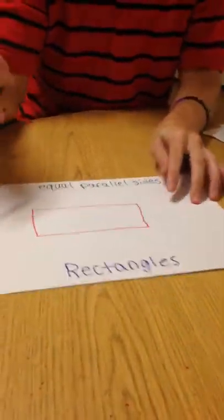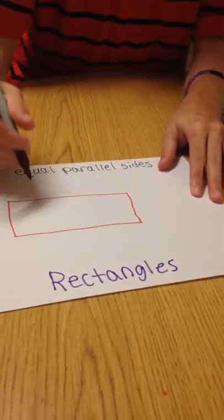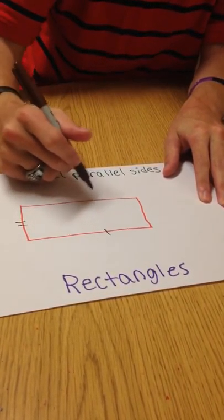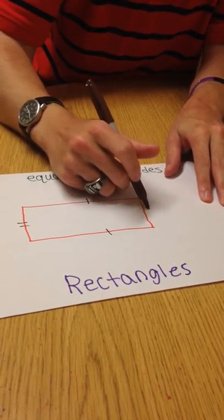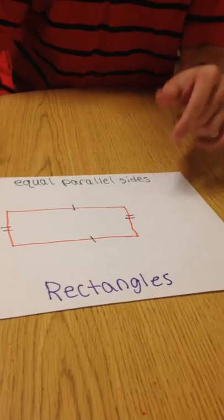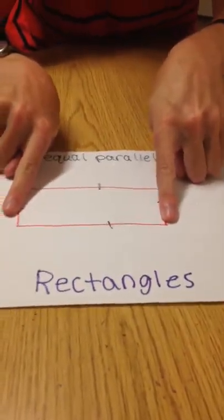The second type of quadrilateral is the rectangle. The rectangle does not have four equal sides. It has two equal parallel sides, which means that the left and right sides are equal, and the top and bottom sides are equal.